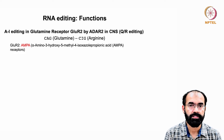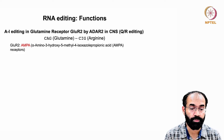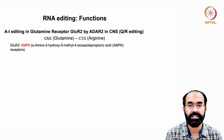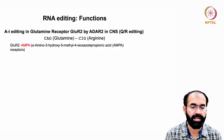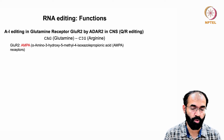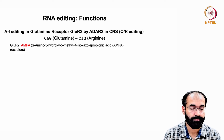We need to understand how important RNA editing is. In A-to-I editing, adenosine gets deaminated and becomes inosine. This A-to-I editing in the glutamate receptor is very, very important — specifically in GluR2.